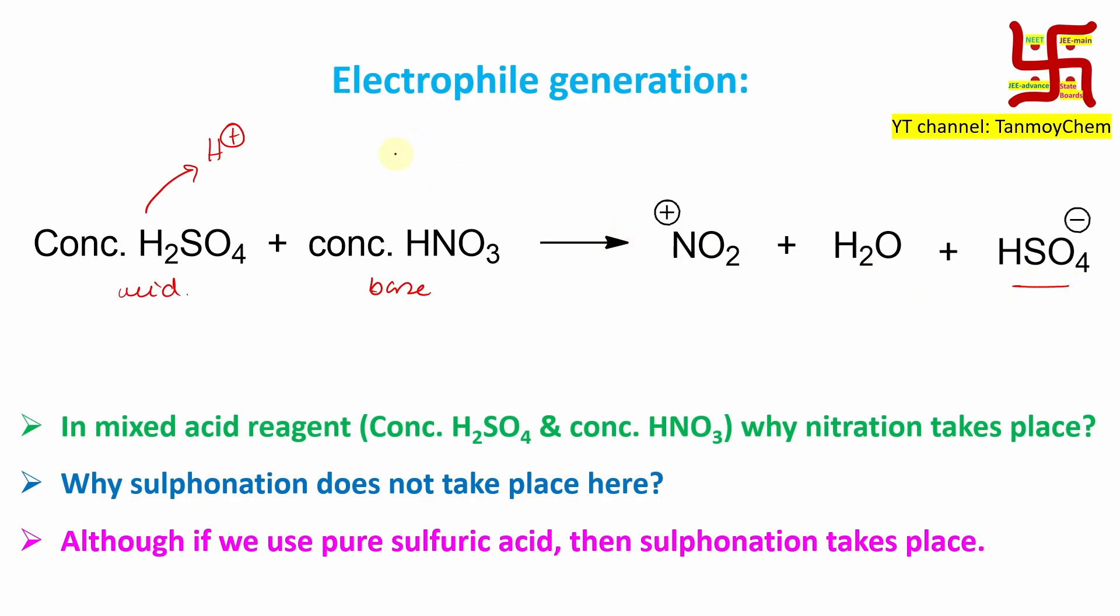If you look at nitric acid, it has actually three oxygens, so protonation will take place at oxygen number three. Why? Because logically, one, two, and three positions are possible.